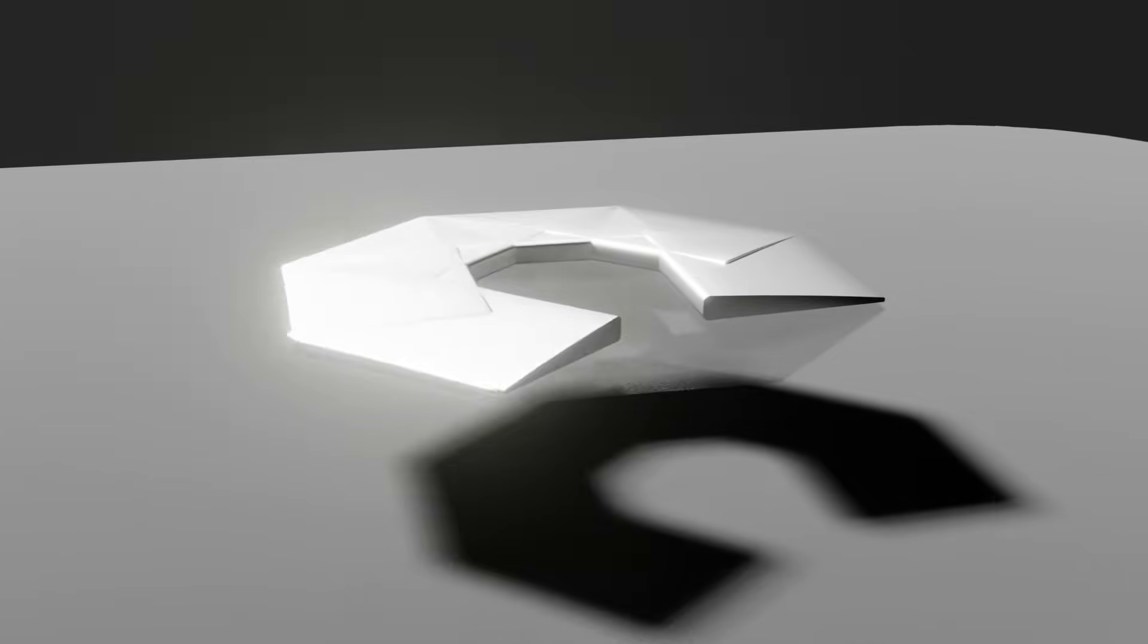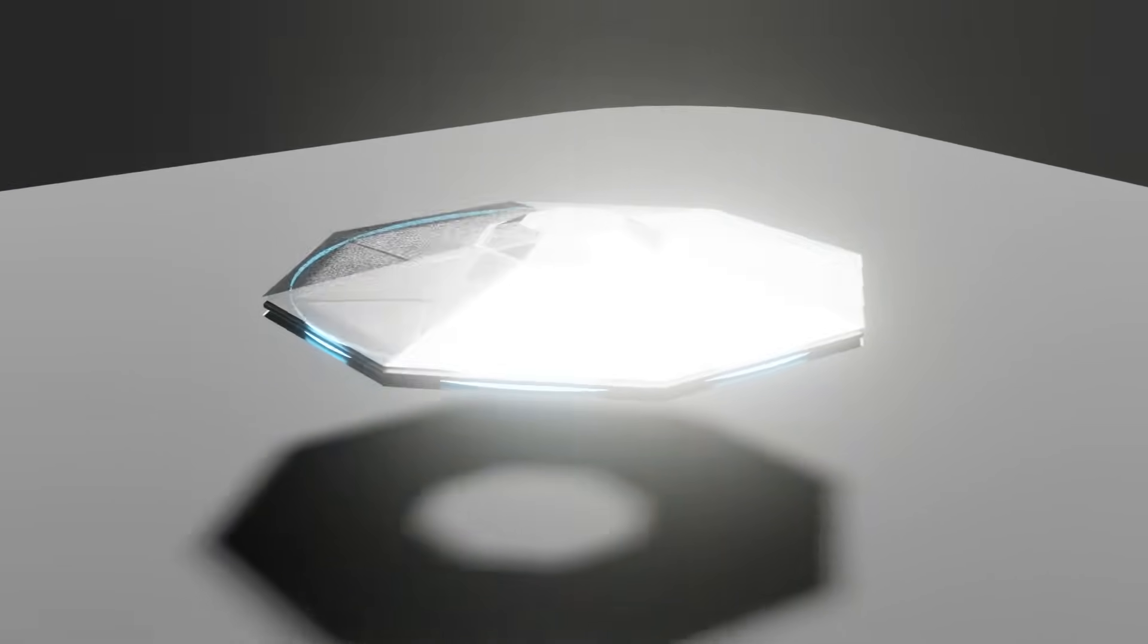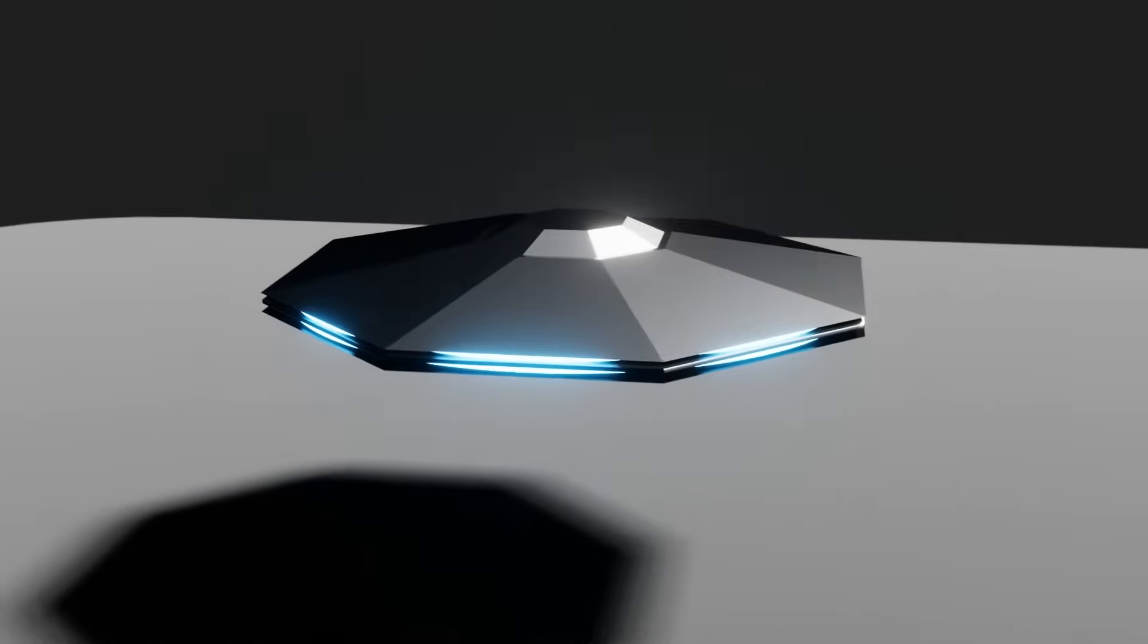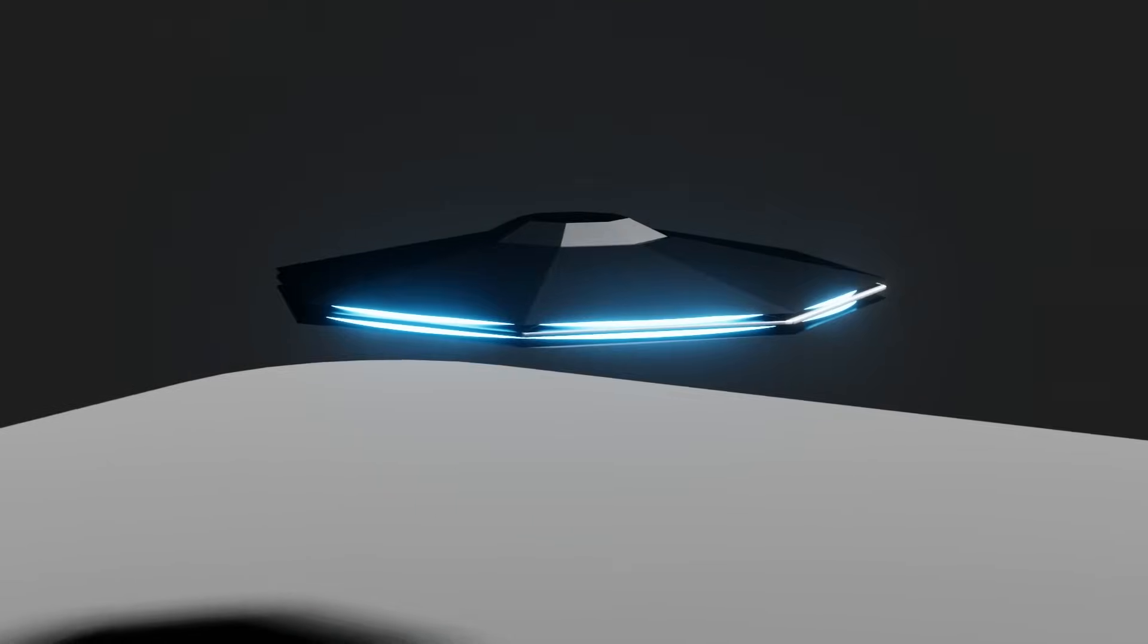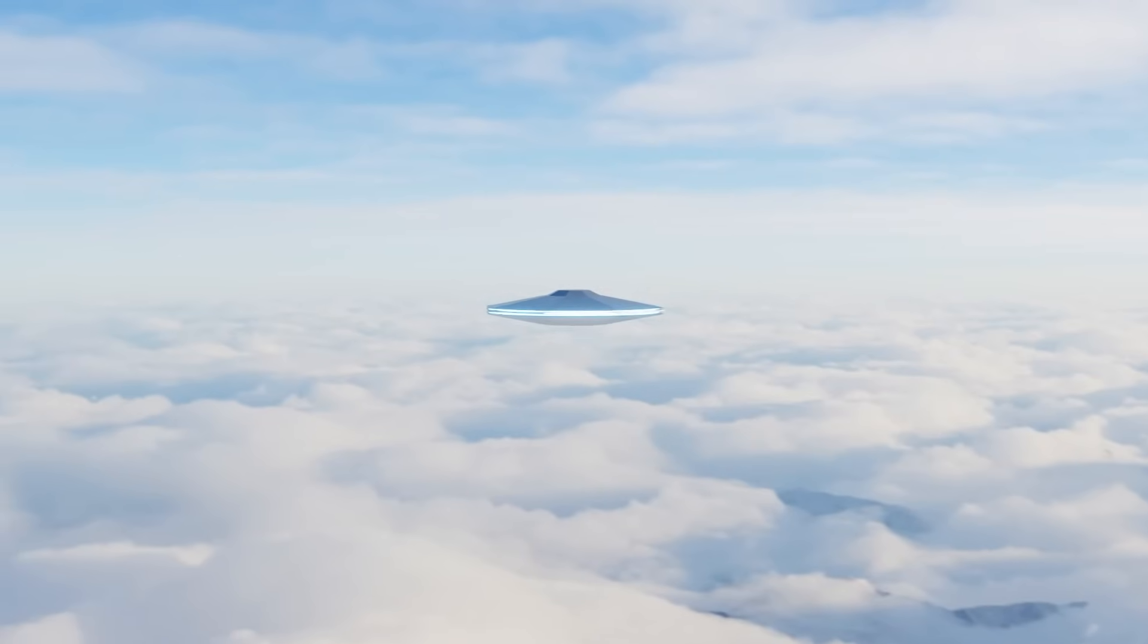MHD propulsion can also come in the form of an MHD plasma jet engine with a very high power density. That is, a small device will produce very high thrust. This is in sharp contrast to ion wind thrusters, which have a very low power density and therefore typically very low thrust.